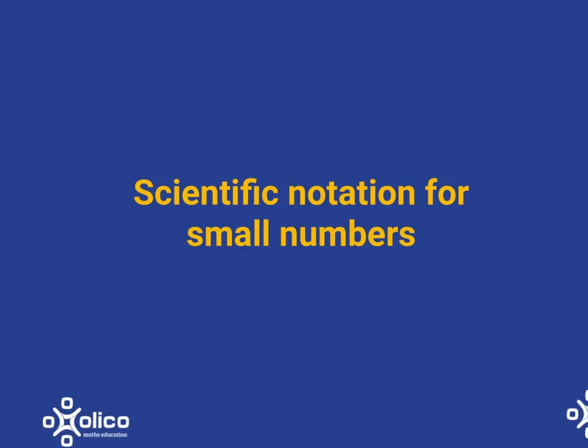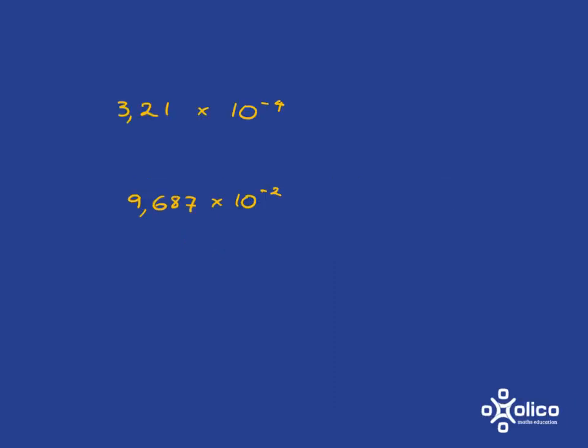We're going to have a look at how we can write scientific notation for small numbers. We have two numbers here that are written in scientific notation. They have a single digit before the comma. But the difference here is now you've got the exponent being a negative.